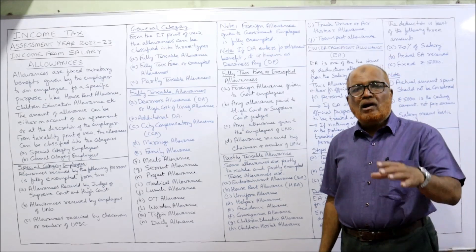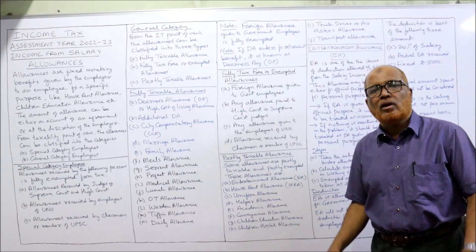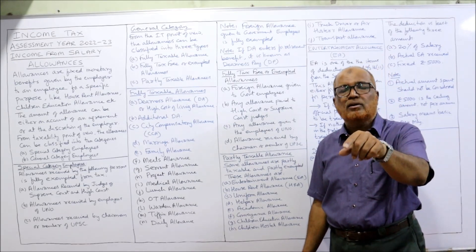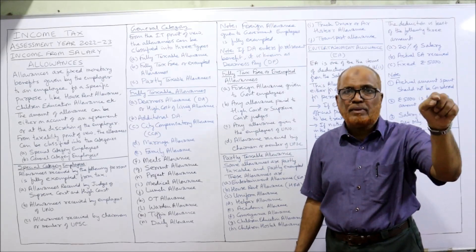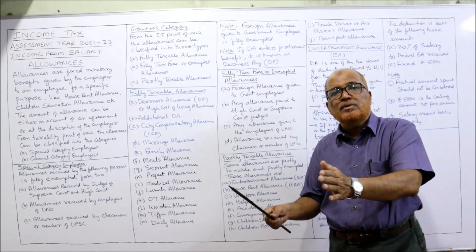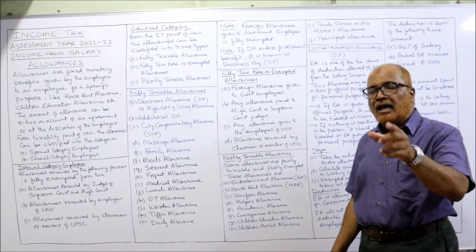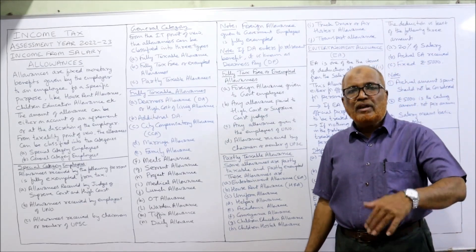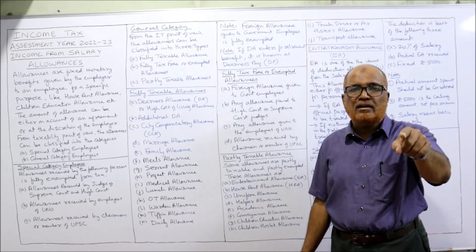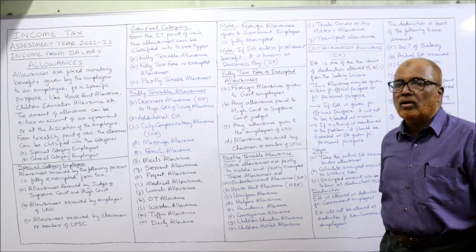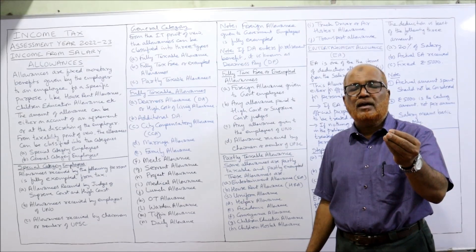Note: foreign allowance given to government employees is fully exempted. For example, if the Indian government appoints Mr. X as ambassador to the USA, Mr. X is serving in the USA but is paid salary and allowances by the Indian government. The salary given to Mr. X is taxable, but the allowances given to Mr. X are not taxable — they are exempted. Also note: if DA enters for retirement benefit, it is called DP (DA for retirement purposes), which you will frequently encounter in problems.